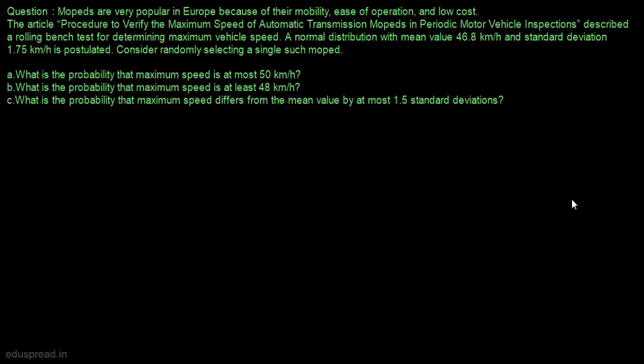In this video, I am going to solve this question. Mopeds are very popular in Europe because of their mobility, ease of operation and low cost. This article described a rolling bench test for determining maximum vehicle speed. A normal distribution with mean value 46.8 km per hour and standard deviation 1.75 km per hour is postulated. Consider randomly selecting a single such moped.